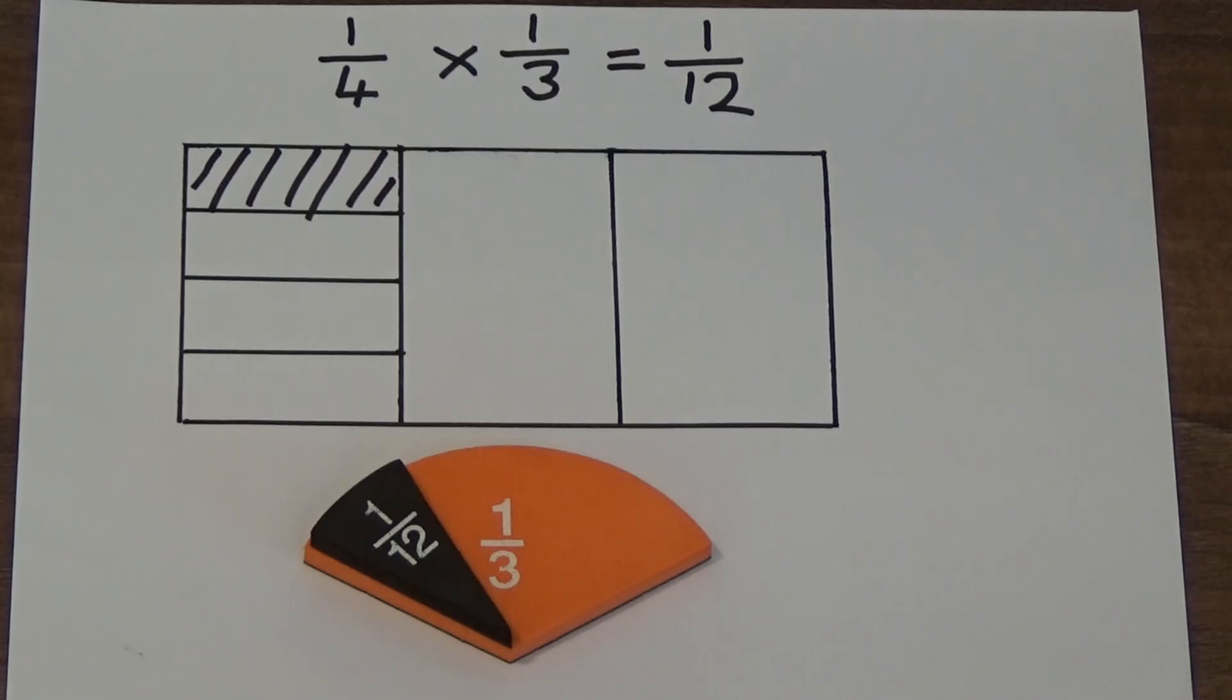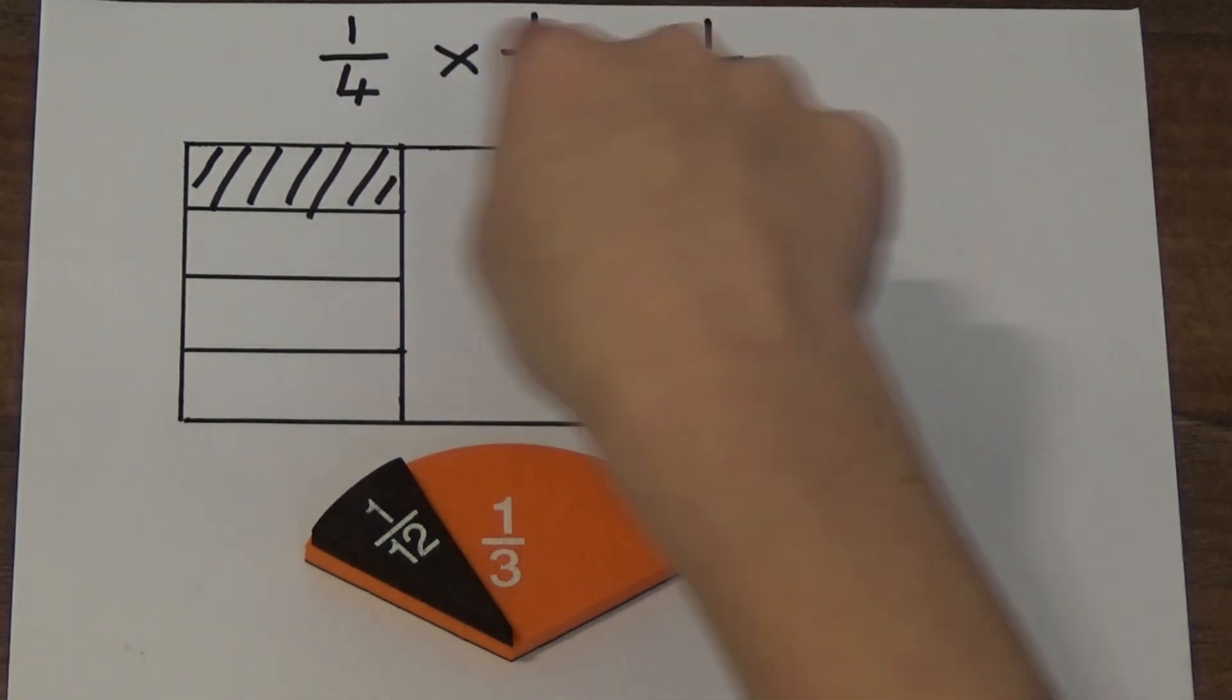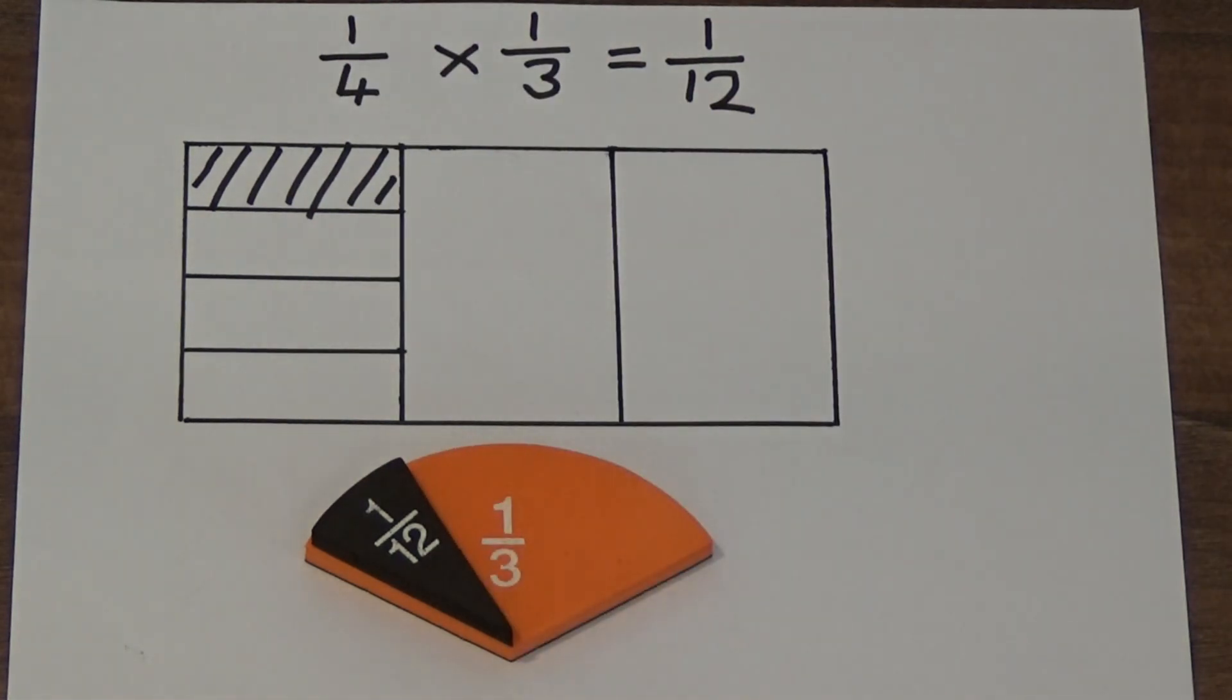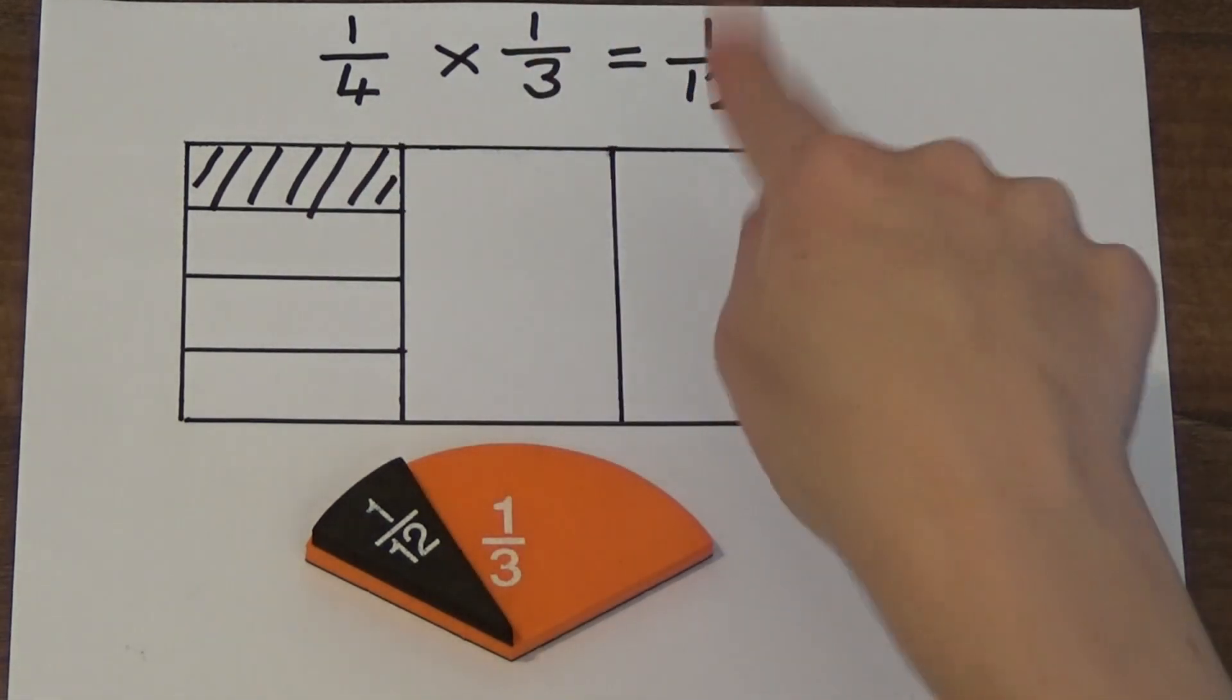Here is another example. I have worked out one quarter multiplied by one third, which is the same as a quarter of a third. We can see from the fraction circles and the drawing that a quarter of a third equals one twelfth. If we look at our calculation, if we multiply the numerators together, we get one. And if we multiply the denominators together, we get twelve.